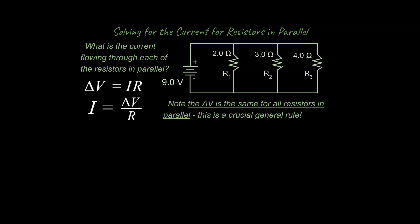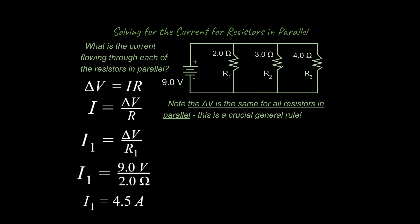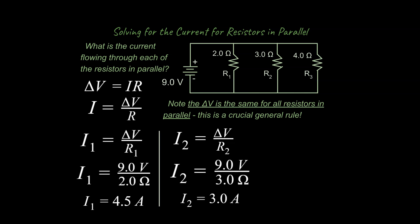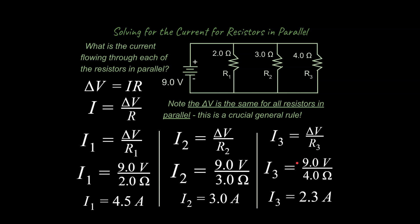To solve for the current through each resistor in parallel, we use Ohm's Law and recognize that the potential drop is the same — 9 volts — across all three resistors. For the first resistor at 2 ohms, we get 4.5 amps. Across the second resistor there's the same potential drop but higher resistance, so there's a lower current — like more rocks meaning less water flow per second. The third resistor also has the same potential drop but a different resistance, giving a different current. These three individual currents should add up to the total current for the entire circuit.